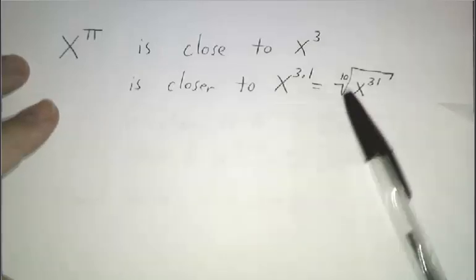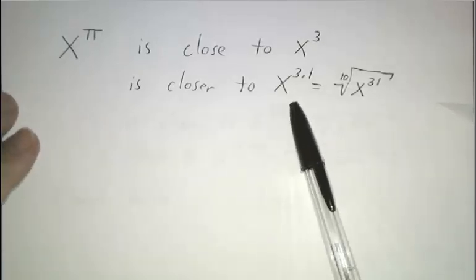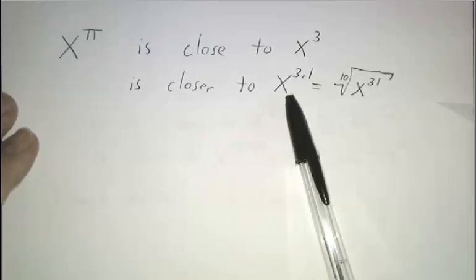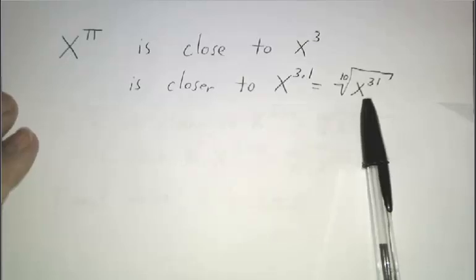And we know that pi is even closer to 3.1, so x to the pi should be closer to x to the 3.1. Now what does x to the 3.1 mean? Well, 3.1 is 31 tenths, so that's the tenth root of x to the 31.